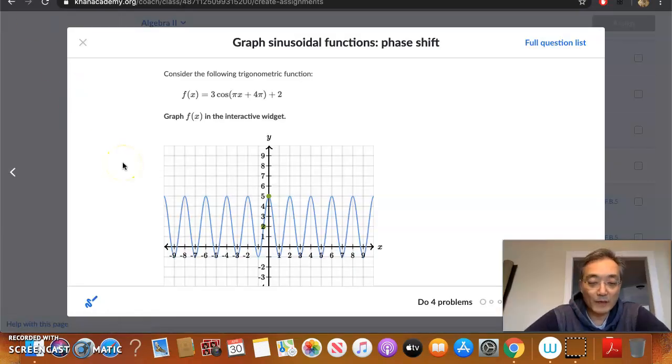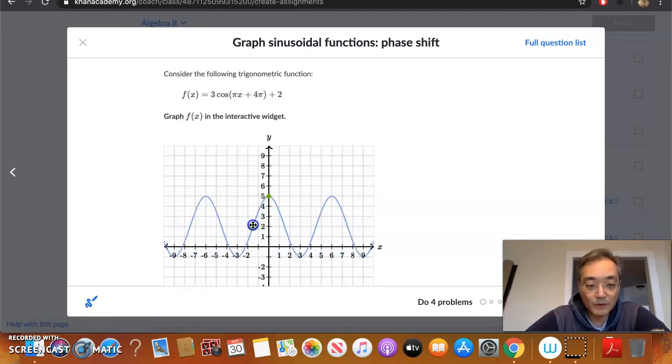Sorry about that. So we are back. So what I was saying was, since we have a phase shift of 4 units to the left, every point on this function has to move 4 units to the left. So the first thing I'm going to move is that midline point. Midline goes 4 units to the left. Here we go. Let's count. We're going to go from here. So here's 1, here's 2, here's 3, and here's 4.